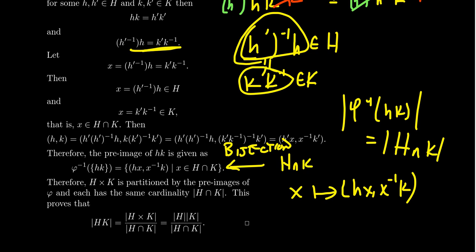Since this is a bijection, this shows that φ inverse of (h, k), the size of this set is always equal to the size of H intersect K right here. The pre-image, this is true for any pre-image. This is true for any ordered pair (h, k).